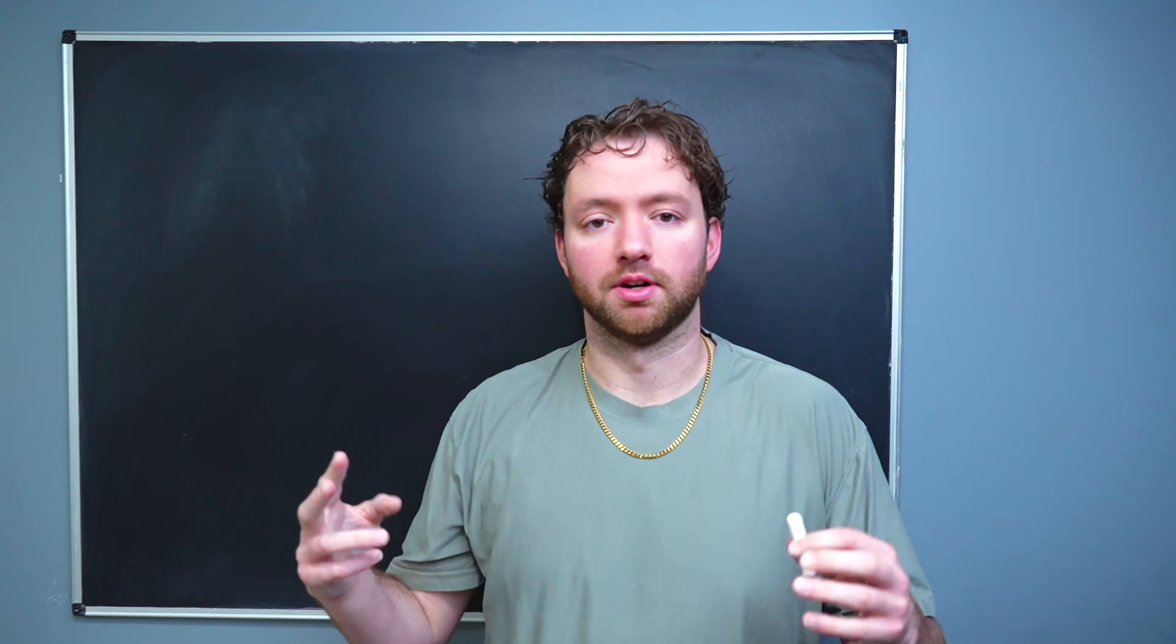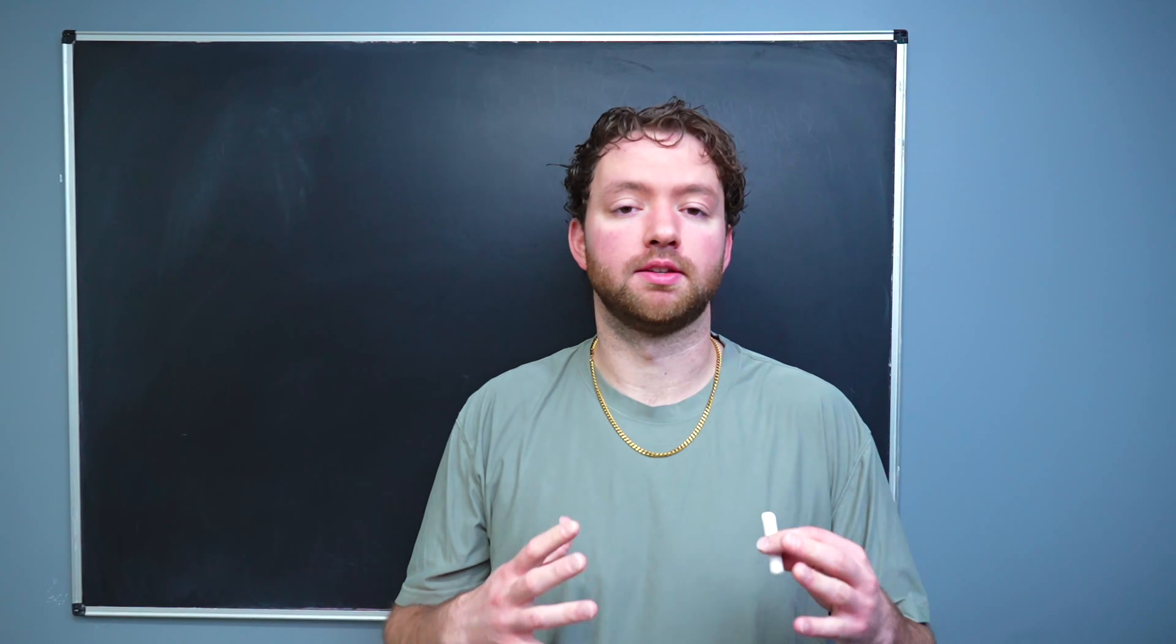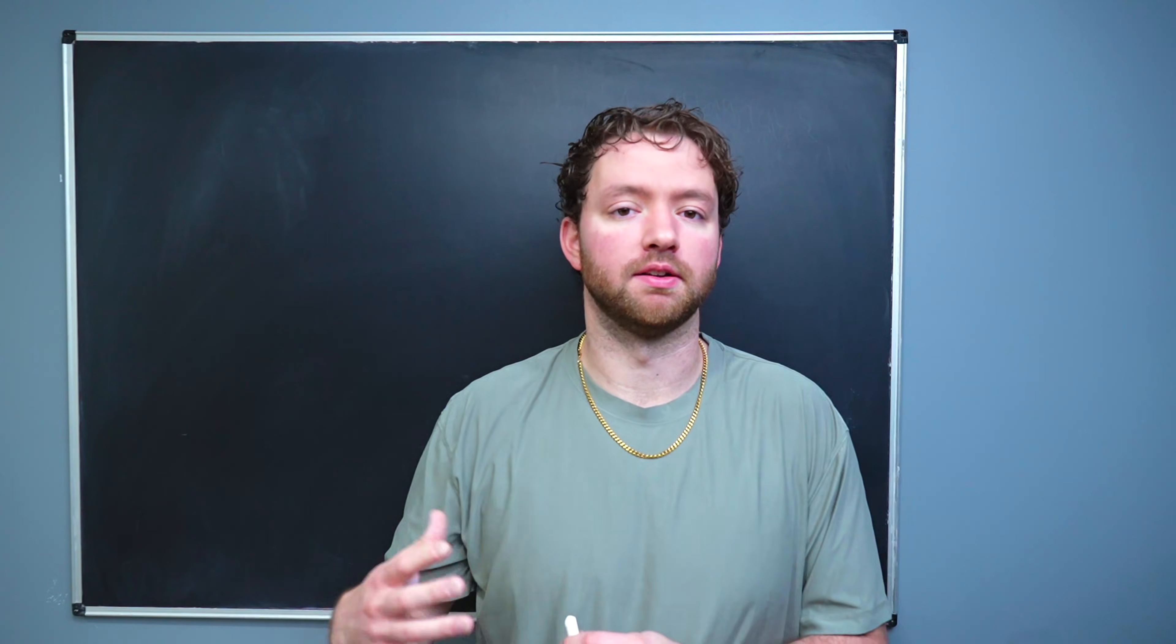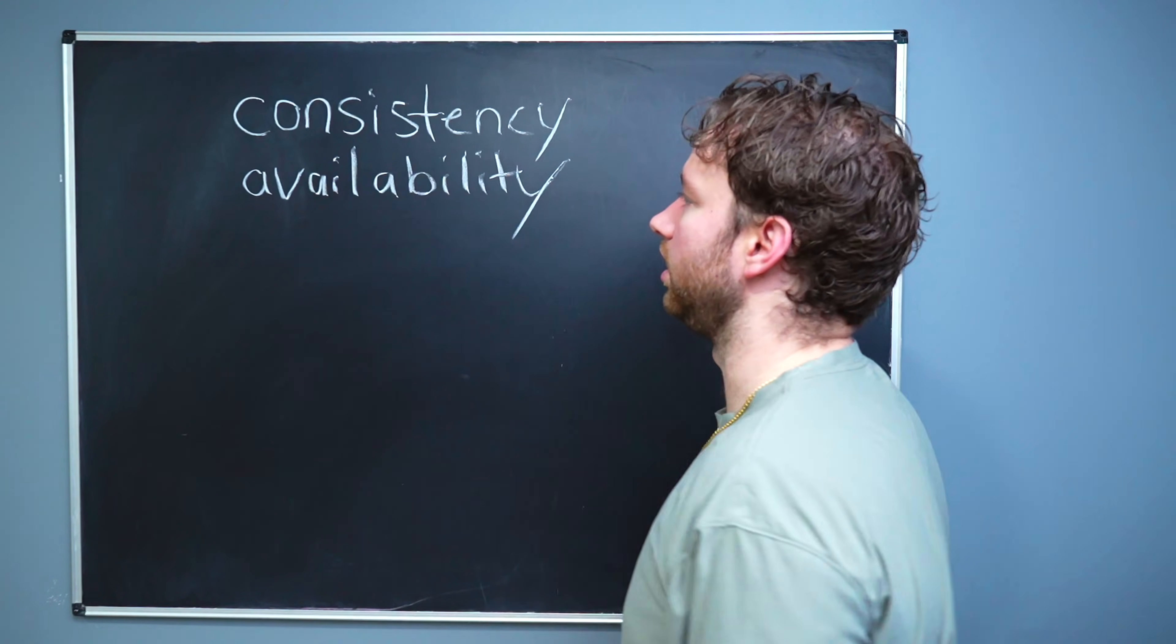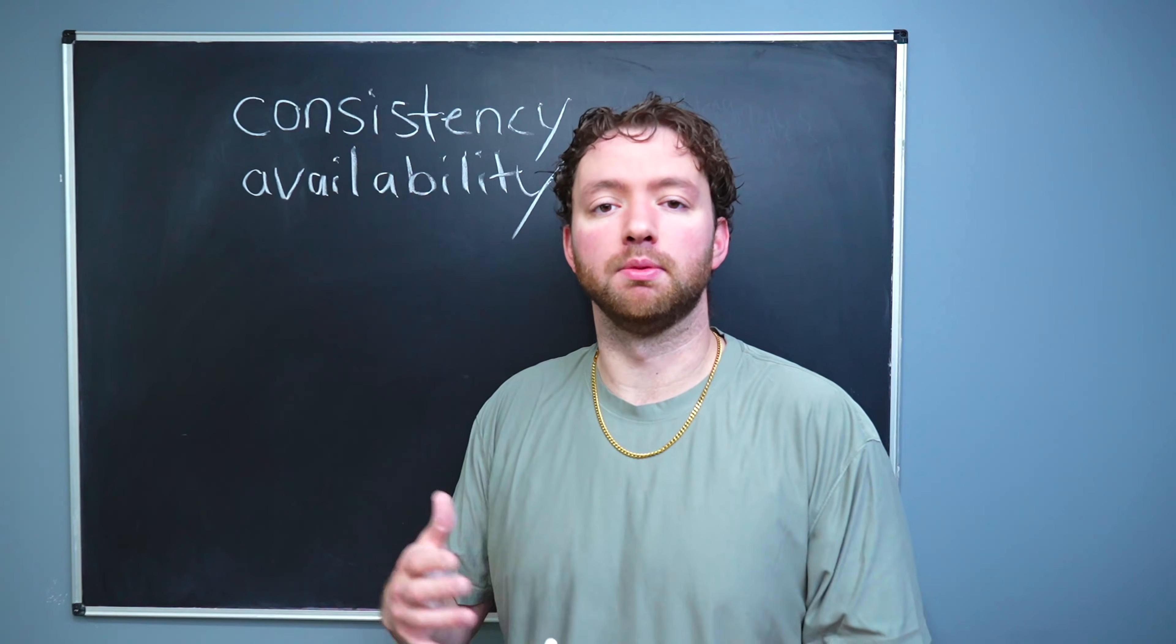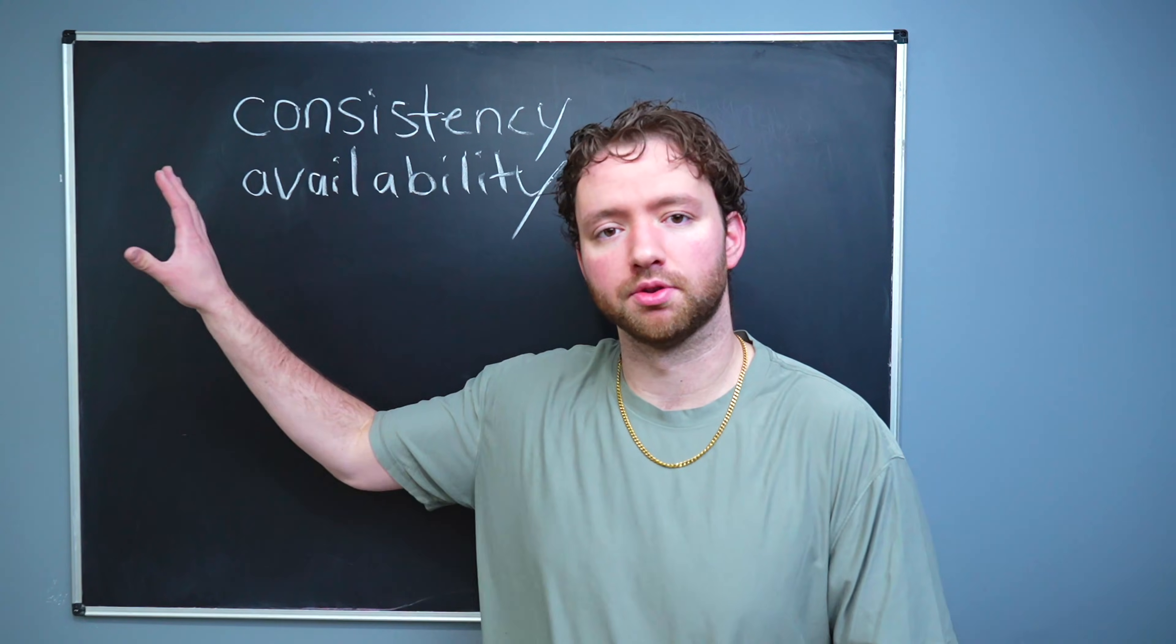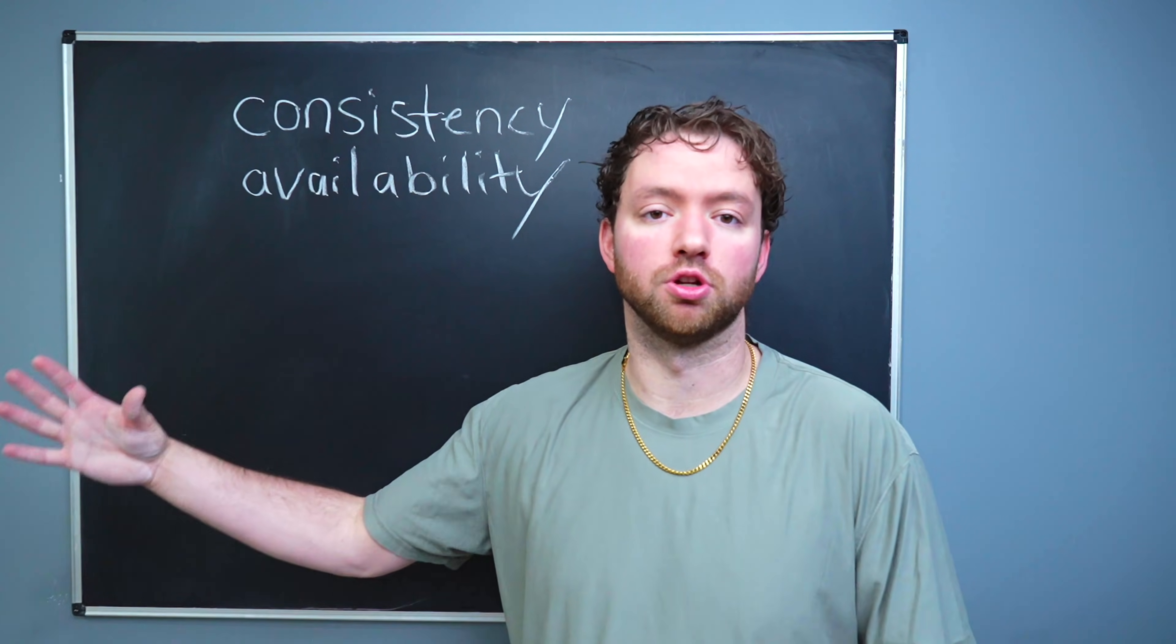For this to all make sense, there are two attributes of distributed database systems you should be familiar with. The first one is consistency, and the second one is availability. Now the CAP theorem is CAP with the P being partition tolerance. We're going to talk about that next, but we're going to start with these two because these are the most important terms you should know.